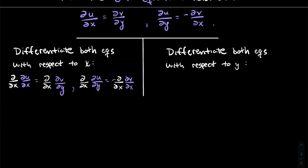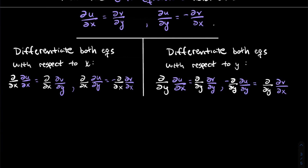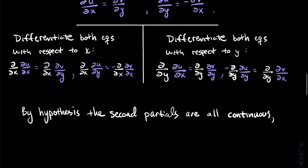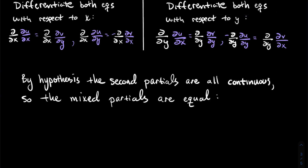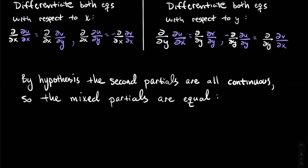And what I'm also going to do is differentiate both CR equations with respect to y — same idea. Notice that I moved the minus sign on the second equation over to the left side. Now, by hypothesis the second partials are continuous, and what that buys us is that the mixed partial derivatives are equal — you might have heard this explained as the second partials commute whenever they're continuous. When you differentiate U with respect to x then y, it's the same as differentiating with respect to y then x. So the two mixed partials underlined in blue have to be the same, and similarly the two in orange have to be the same.